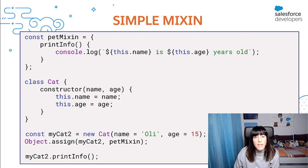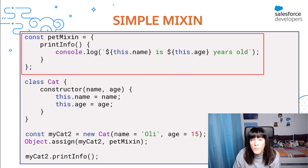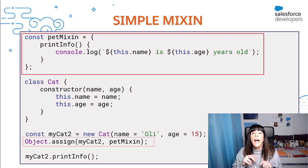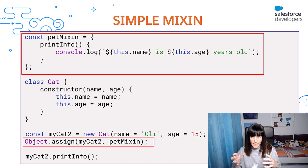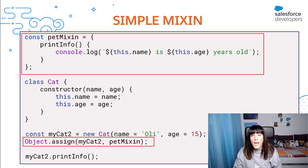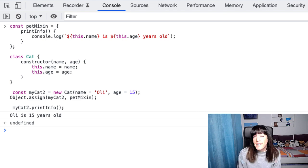We could implement a similar behavior by implementing a mixin pattern. Here we have an object in which we have defined the printInfo method that we want cats to use, and we can make cats use that method by simply assigning the mixin object to the cat object in question. Indeed, what we are doing is to mix the two objects together. Let's execute the code and see the result. We can use the mixingPrintInfo method to print the age of my second cat.